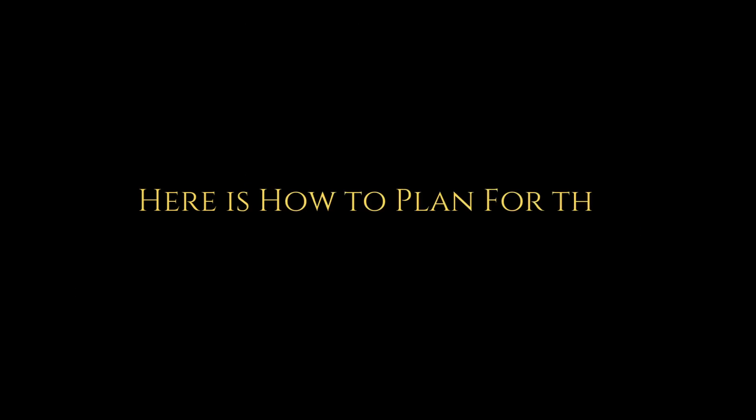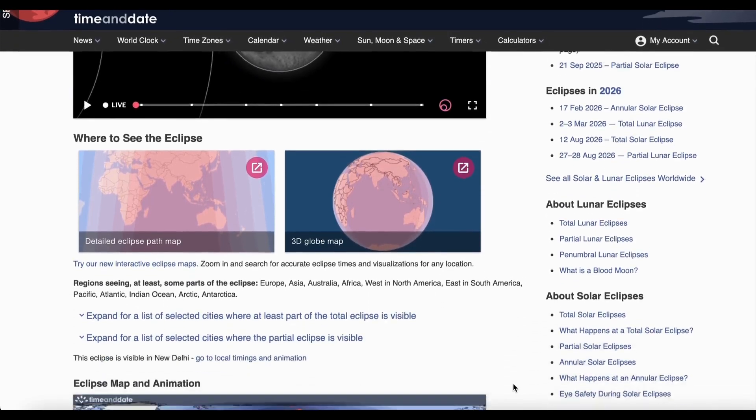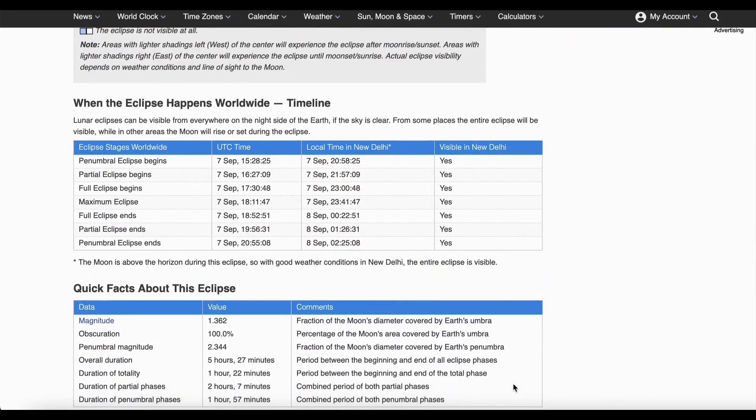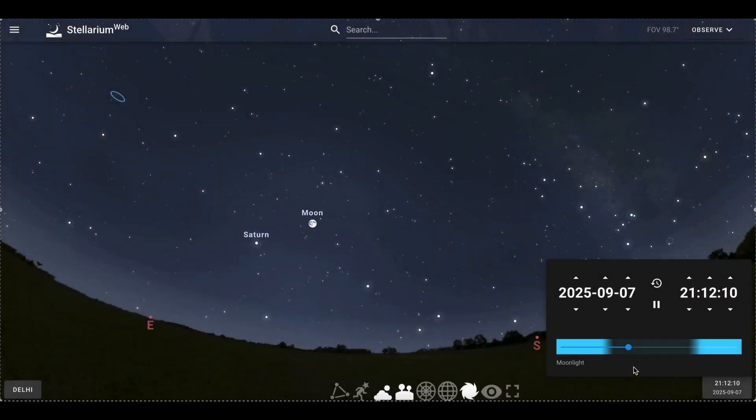If you want to plan your viewing, I'll strongly suggest using timeanddate.com. It has precise maps and timings for any city on Earth. I'm leaving the link in the description below, along with some other useful resources.